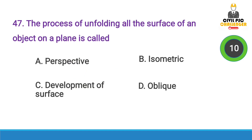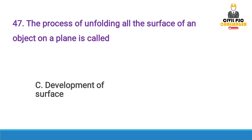Next question: The process of unfolding the surface of an object onto a plane is called — Answer option C, Development of Surface.